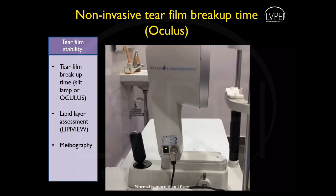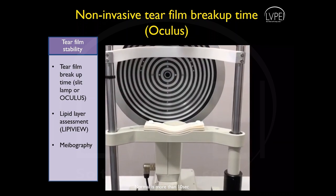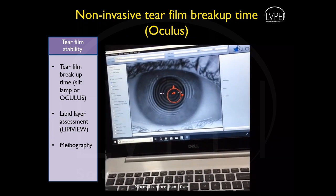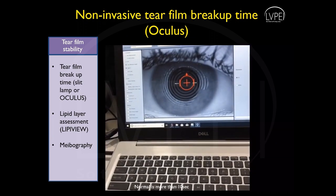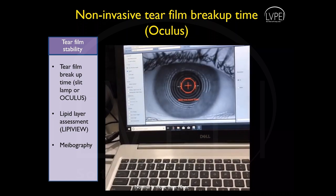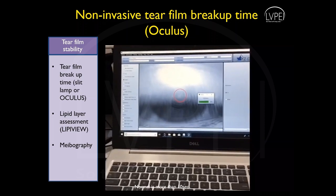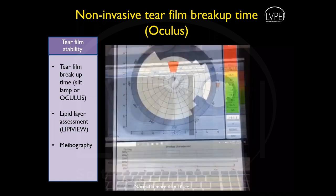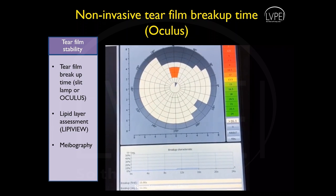The non-invasive method requires no fluorescein instillation and is a more precise and repeatable method. The patient is asked to blink two times and then asked to hold the blink as long as they can. An image is captured and the measurement is displayed in seconds with a graphical display of dry spots.